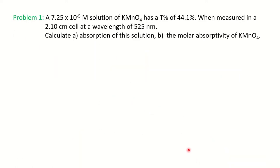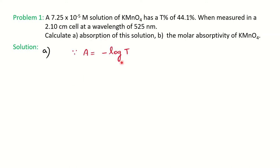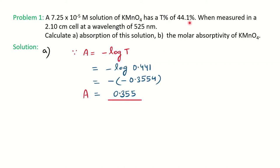Now let's apply this to solve some problems. In the first problem, the molarity of the solution is given, the percentage of transmittance is given, and the thickness L is given at wavelength 525 nm — because Beer-Lambert's law works on monochromatic radiation. They are asking you to calculate the absorbance A. Since percentage transmittance is 44.1%, we write T = 0.441. Taking A = −log(T), you get the absorbance value of 0.355.